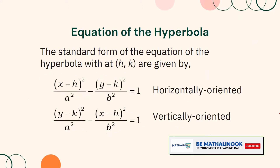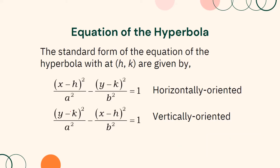The standard form of the equation with center at h, k is given by (x − h)²/a² − (y − k)²/b² = 1 for a horizontally oriented hyperbola, and (y − k)²/a² − (x − h)²/b² = 1 for the vertically oriented hyperbola.